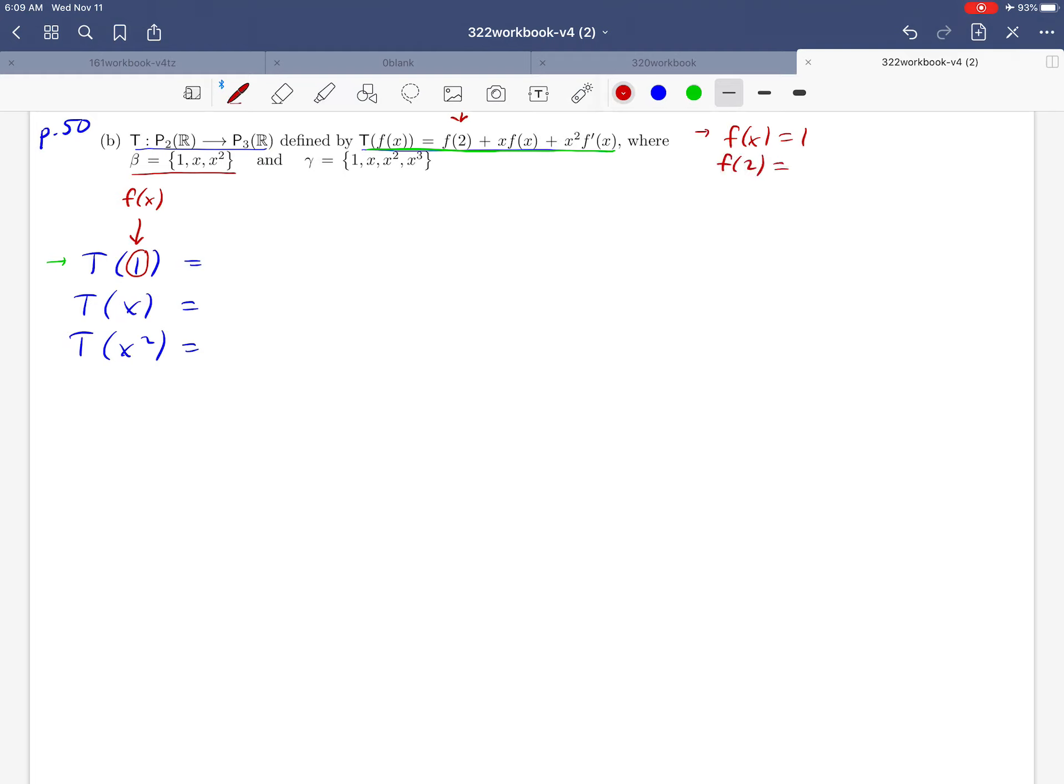what would f of 2 be? It would be like saying we're going to substitute 2 in for x, but if our output is 1, regardless of what the x is that goes in, we're just going to get 1 out of that. So the upshot of all of this is that that first term, f of 2, is going to become 1 in this case. And then moving on to the next term here, xf of x, we're going to get x times f of x, which is just 1.